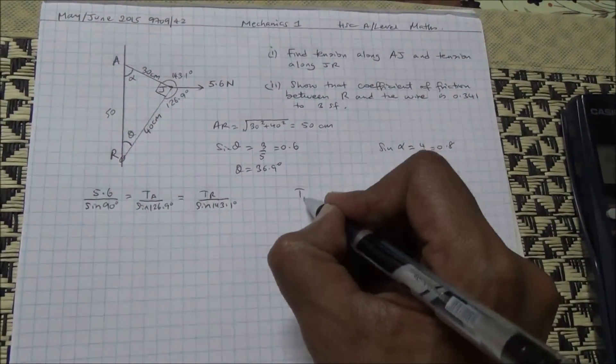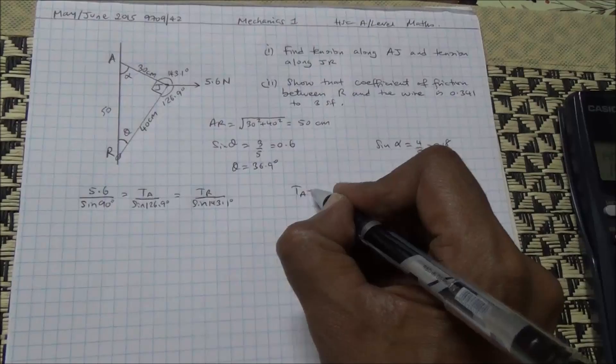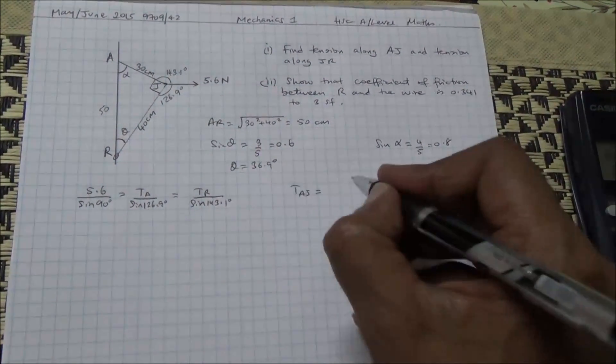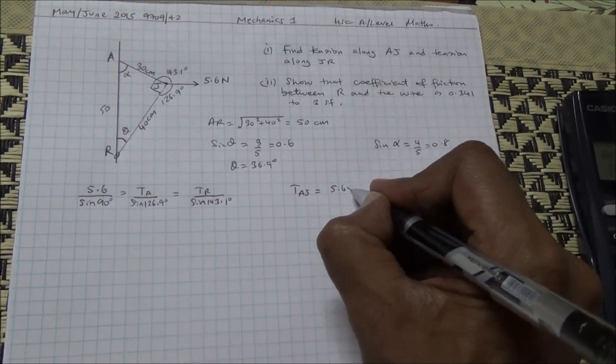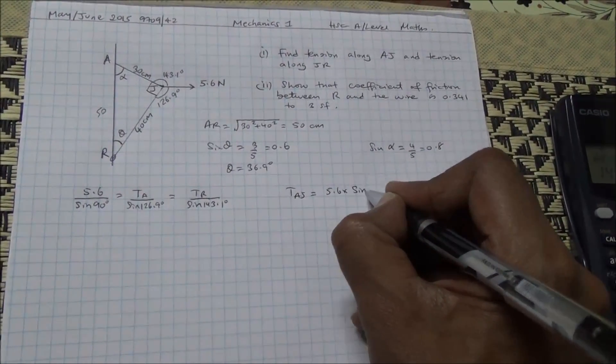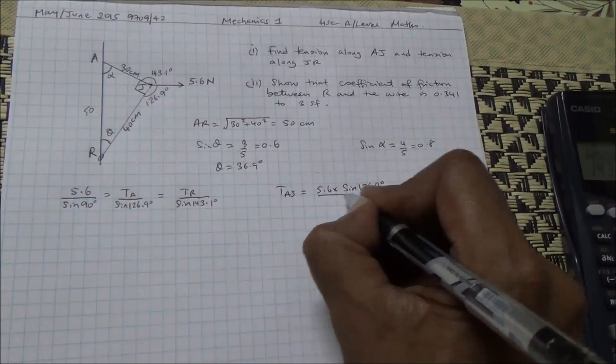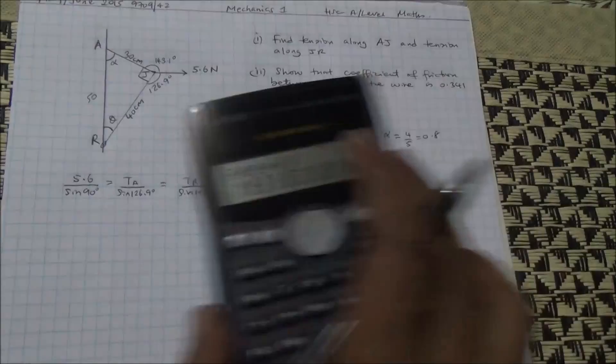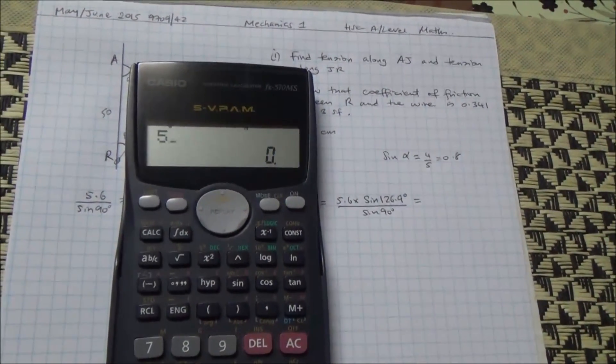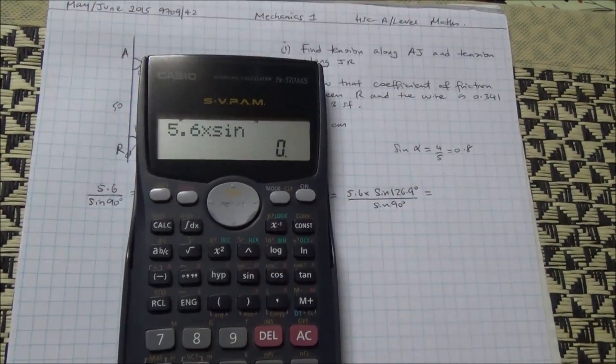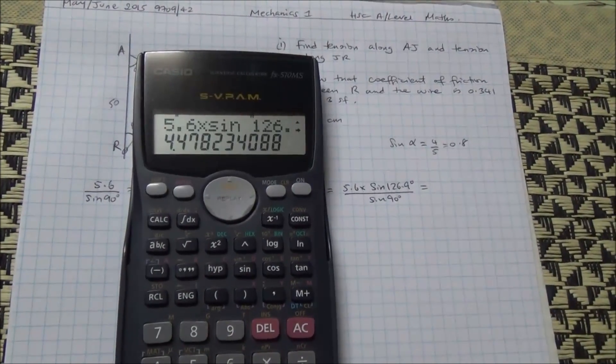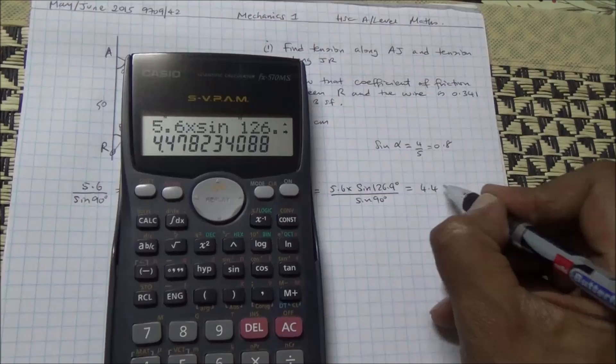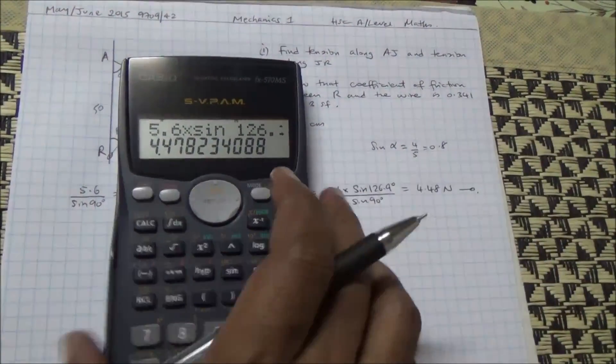From here, what is the tension along AJ? It's going to be cross-multiply 5.6 times this. So 5.6 multiplied by the sine of 126.9 divided by the sine of 90. 5.6 multiplied by the sine of 126.9 is 4.478, so 4.48 Newtons.